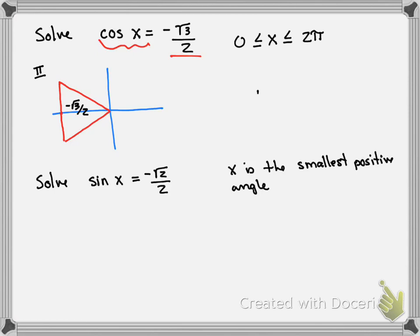This one is 5 pi over 6, and this one is 7 pi over 6 around the unit circle.